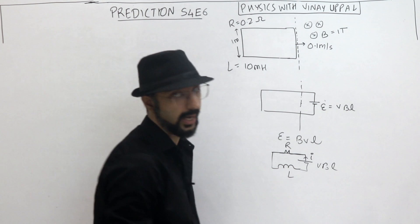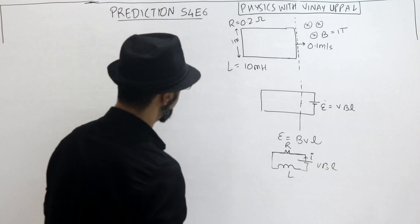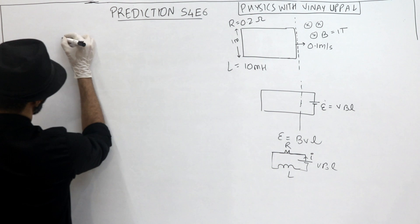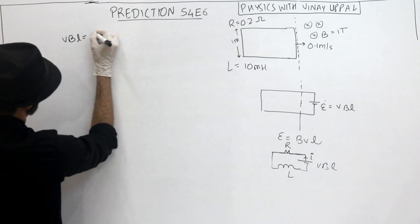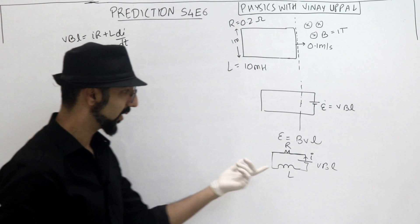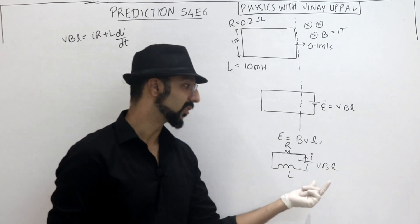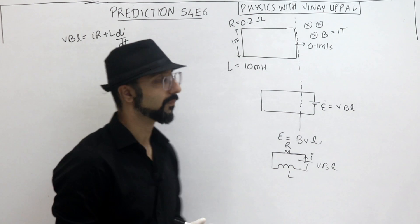Alright. So let's say the current is i at any instant. So let's write the circuit equation. So what will happen? VBL should be equal to IR plus L di/dt. This is our standard RL circuit. Just EMF is VBL. But here, EMF is not a constant because velocity may be changing. Alright. So this is one equation.